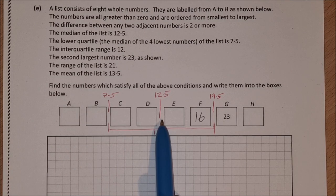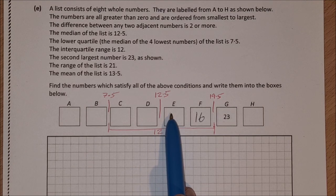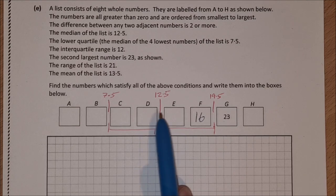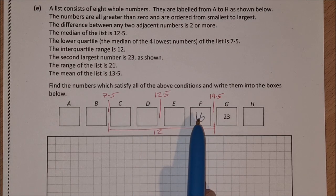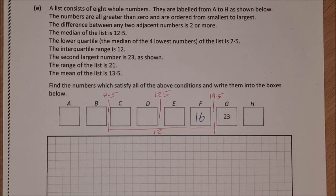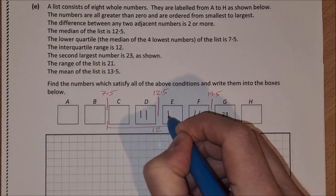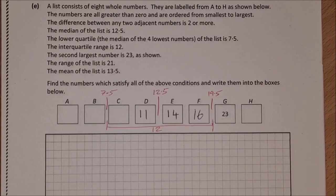What about 11 and 14? Well, 11 and 14 would work. But could it be anything else? Could we say have 10 and 15? 10 and 15 looks like it could work, but the difference between 15 and 16 is only 1. So it can't be 10 and 15. It must then be 11 and 14. So now we have D and E.